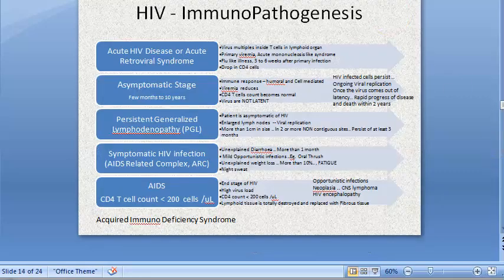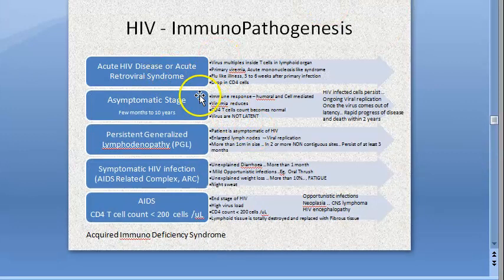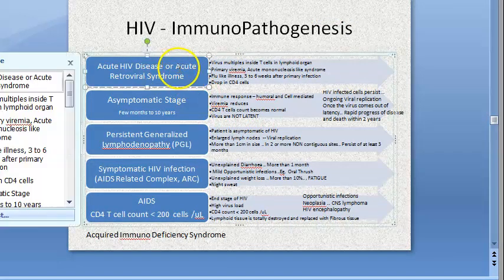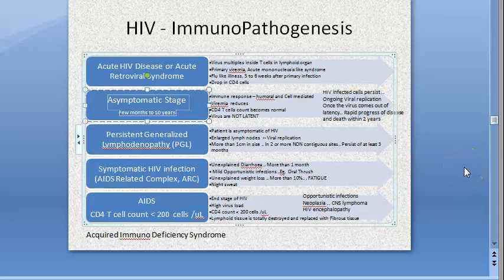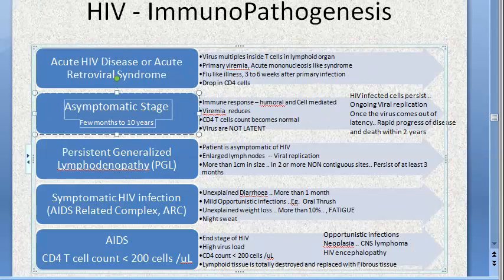We saw the immunopathogenesis. There is an active HIV disease or acute retroviral syndrome where flu-like symptoms appear and there is a drop in CD4 count. Then there is an asymptomatic stage lasting from months to years — this is clinical dormancy, but the virus is still replicating. The body's immune system takes over and viremia reduces, so it is the asymptomatic phase.